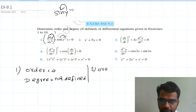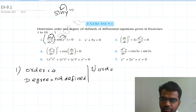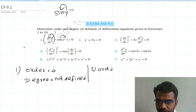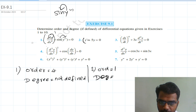Second question: y' + 5y = 0. The highest order derivative is y', so order equal to 1. The highest power value of y' is 1, so degree equal to 1.